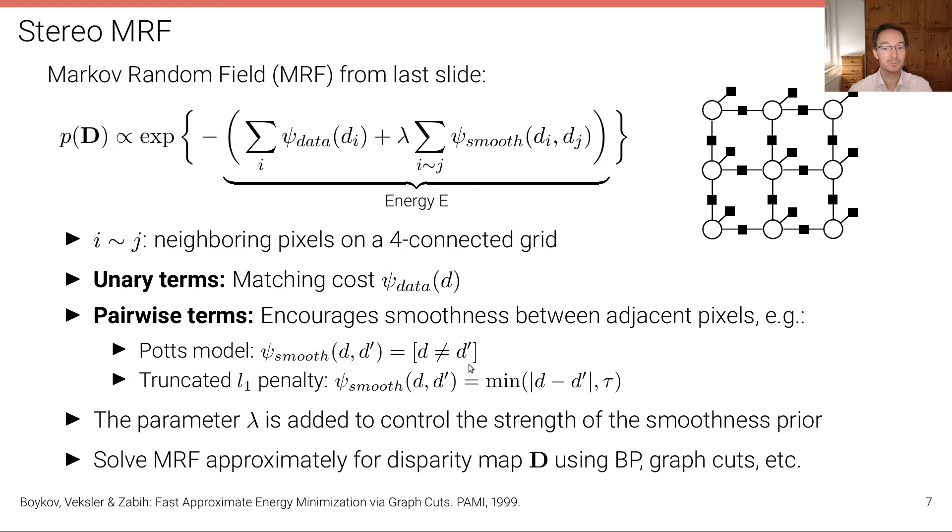The lowest energy value would be obtained in terms of the smoothness or pairwise terms by just having a constant disparity map where all the d's are the same. But, of course, in that case, the matching cost would be high. Because unless this would be really a scene where we are looking at a plane where this actually holds, we would violate the matching cost. So now, by solving this MRF, we are trading off the unary term and the pairwise term. And this tradeoff is controlled by this parameter lambda that we have introduced, which is the regularization strength or weight.